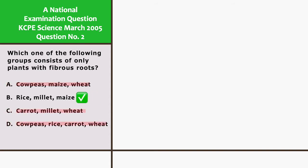The answer is B. Rice, millet, and maize have a fibrous root system.